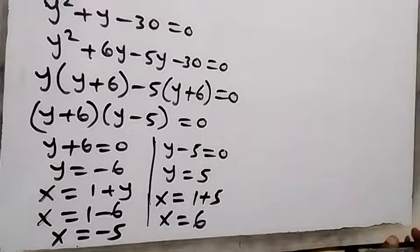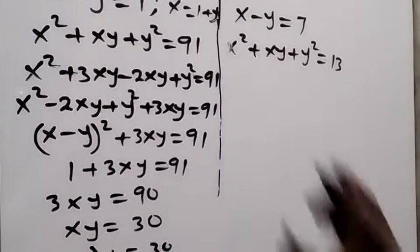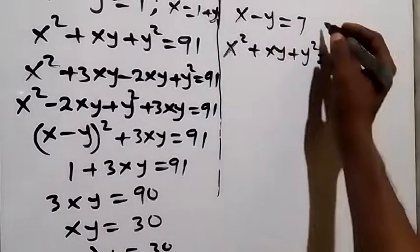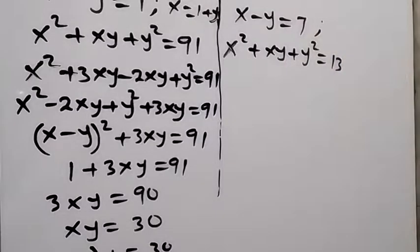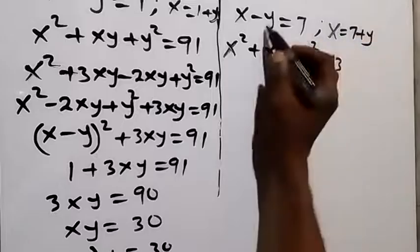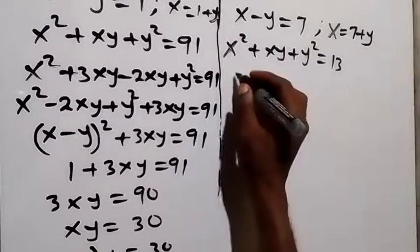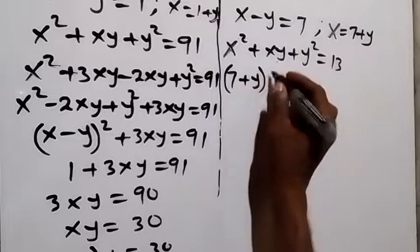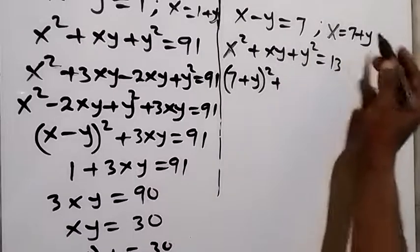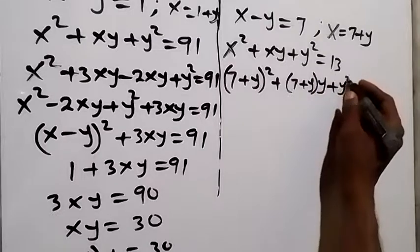Now we solve the second case: x minus y equals 7 and x squared plus xy plus y squared equals 13. From the first equation, x equals 7 plus y. We replace x as 7 plus y in the second equation. So this becomes 7 plus y, squared, plus 7 plus y times y, plus y squared equals 13.